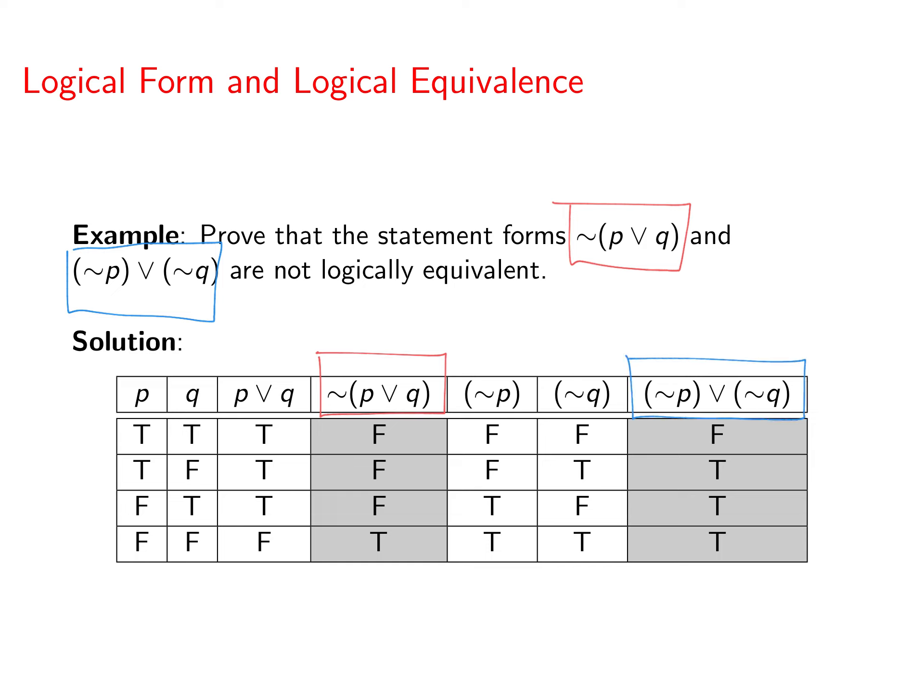Alright, there's a lot of work in here that went into creating this truth table. What you should see now is that the two entries, the two values for the statement forms we're interested in, do not have identical profiles. They do not all have the same truth statements associated with them. So these are not logically equivalent. So the thing that I've circled in green would have to be the same if they were going to be logically equivalent.